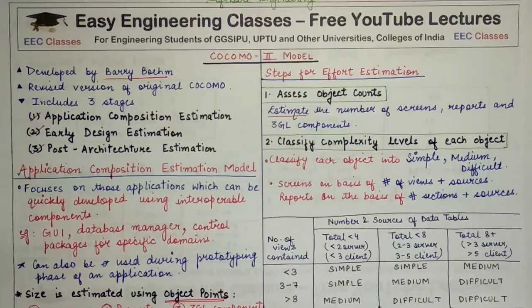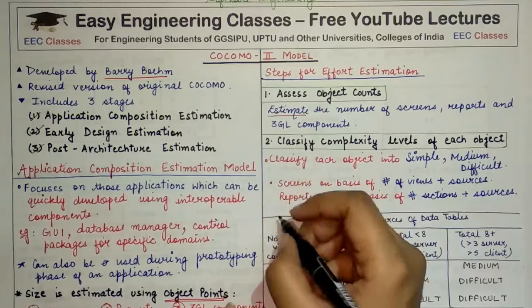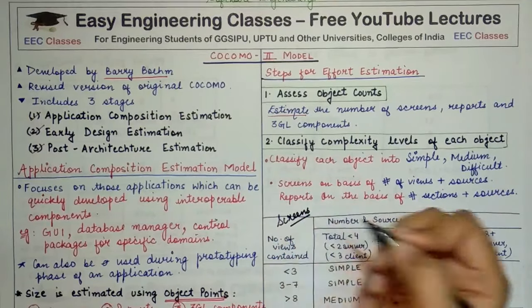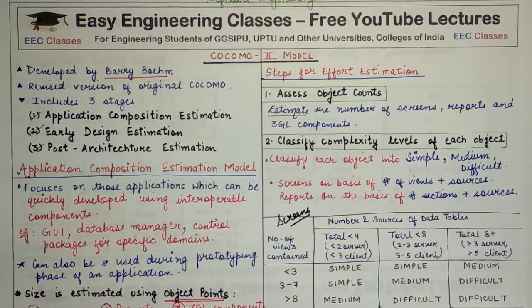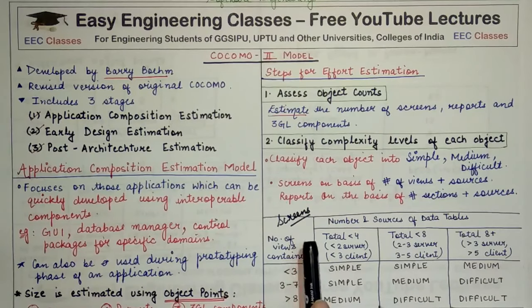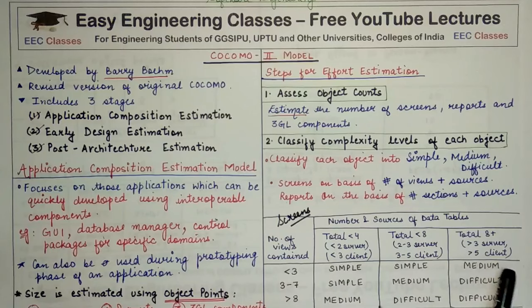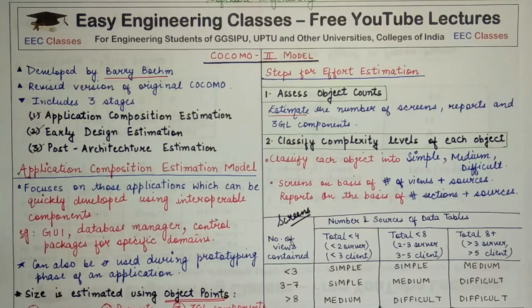Suppose you have counted the number of screens. Here is the table showing the categorization for screens. First you check how many views are on that screen. If the number of views is less than 3, you pick a value from the first row. If it is 3 to 7, you consider the second row. If the number of views in the screen are greater than 8, you consider the third row. These values will be provided to you in the question — you will be given how many screens, reports, and components your software has, and how many views, sections, or sources each screen has.